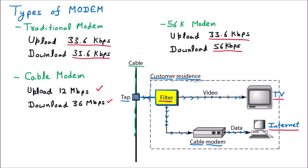When the signal from the filter goes to the TV, a coaxial cable is used so that the channels can be seen. The coaxial cable carries different frequencies for the various channels that can be watched on TV. So the cable modem serves the dual purpose of watching TV as well as providing internet connectivity.